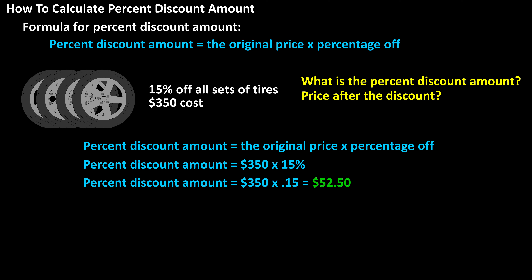The price of the tires after the discount is $350 — the original price — minus $52.50, the discount amount, which equals $297.50 as the price of the tires after the discount.